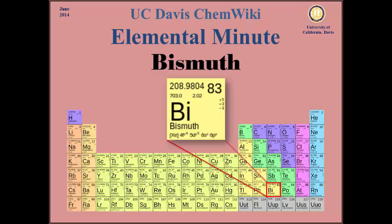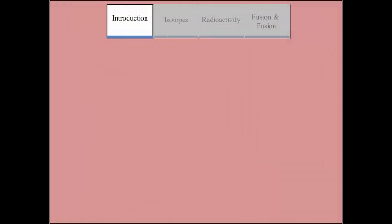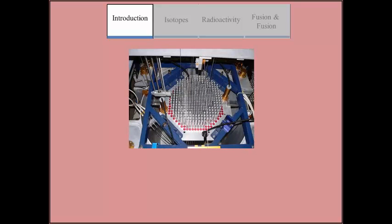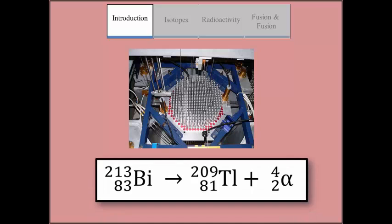Bismuth has a few common nuclear applications. Lead-bismuth alloys are sometimes used as coolants in nuclear reactors. In addition, bismuth-213, which decays with the emission of an alpha particle, is used to treat patients with leukemia.